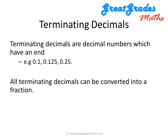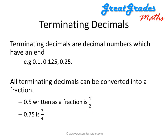One important thing to note about terminating decimals is that all of them can be converted into a fraction. For instance, 0.5 can be written as 1 over 2, or a half. And the number 0.75 can also be written as a fraction as 3 over 4.